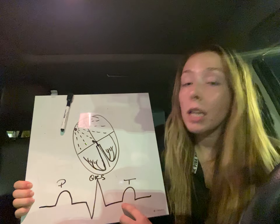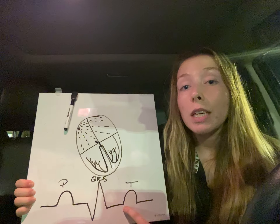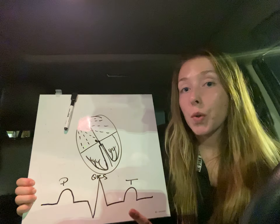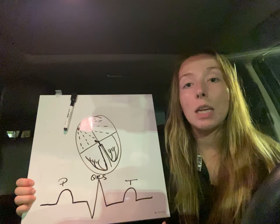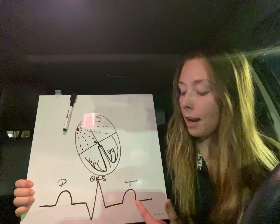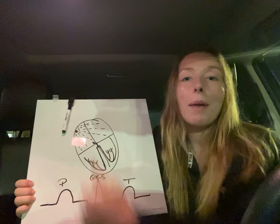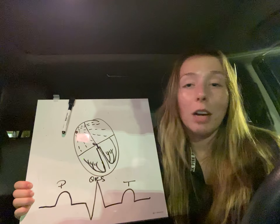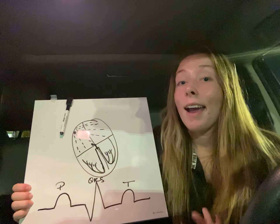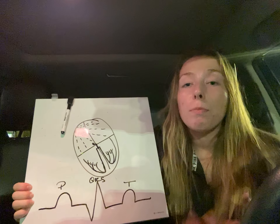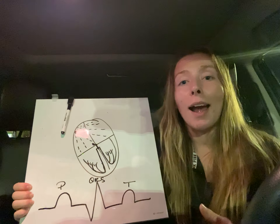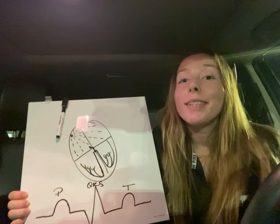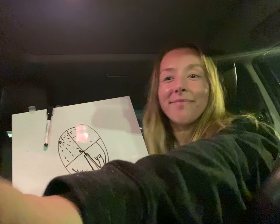Here is where the signal for the ventricles to be repolarized occurs, and that's what the T wave is. Then it stops and we rinse and repeat, and it happens all over again. This is the rhythmic pattern that your heart has if it beats normally. Till next time on Car Talks.